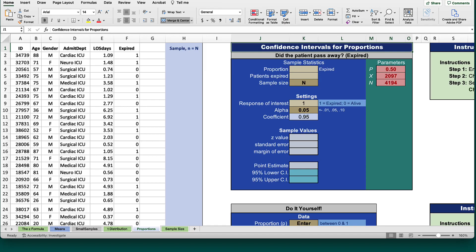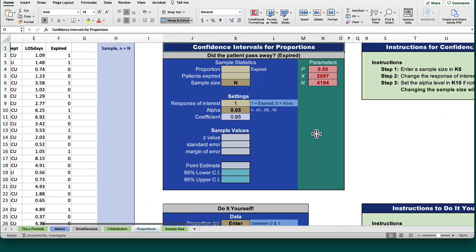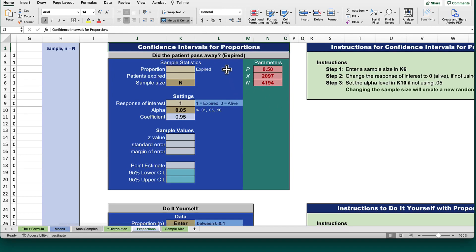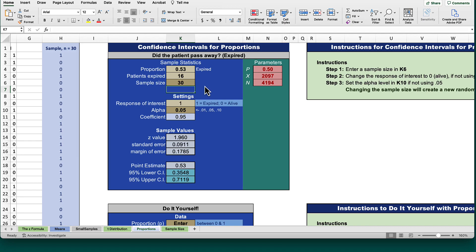Find the box labeled Confidence Intervals for Proportions. For this example, all we need to do is enter the sample size. But because we are randomly selecting a sample each time, your answers will differ from the answers that you see on your screen. Enter a sample size of 30. Compare the proportion in the box that says expired to the actual population parameter of 0.5.